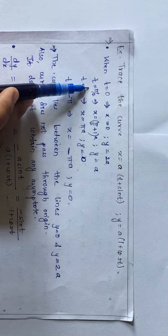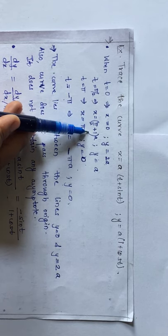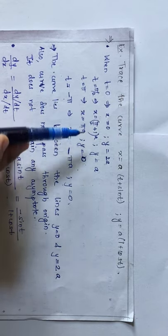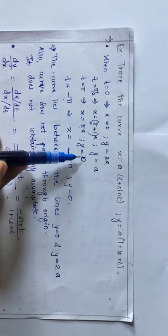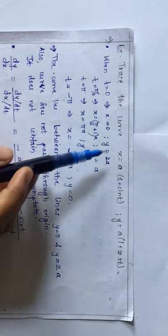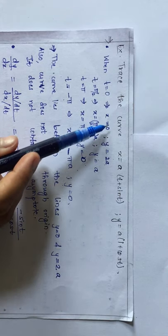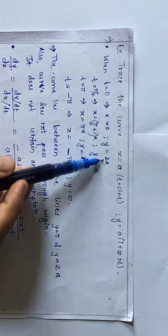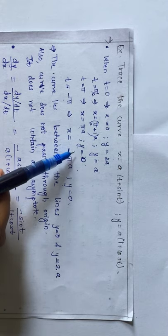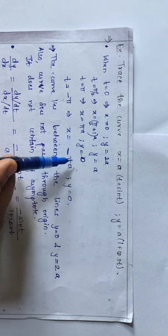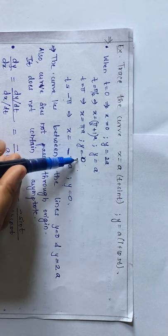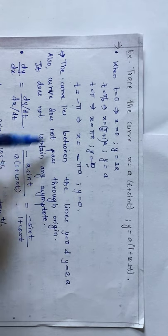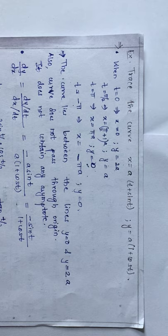When t = π/2, x = a(π/2 + 1) and y = a. When t = π, x = πa and y = 0. So as x goes from 0 to πa, y decreases from 2a to 0, meaning y lies between 0 and 2a. The greatest value for y is 2a and the lowest is 0, so the curve lies between the lines y = 0 and y = 2a.